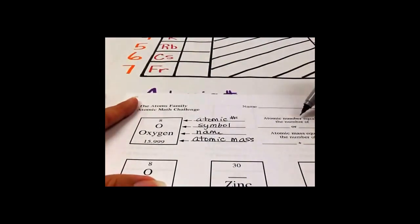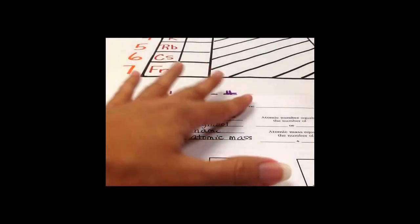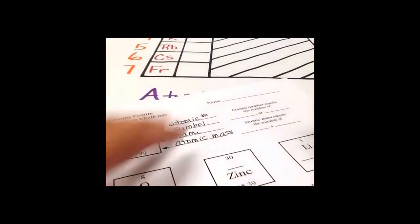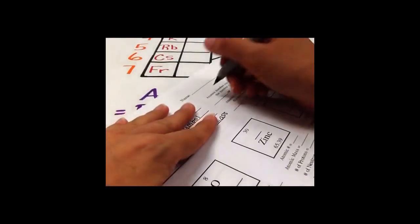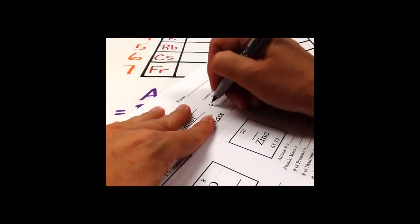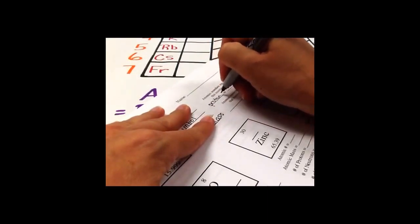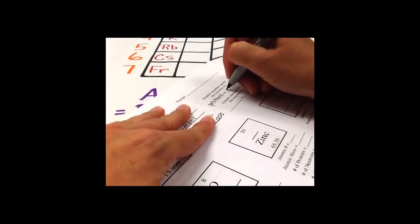The atomic number equals the number of... you guys should have this memorized by now. So the atomic number is equal to protons or electrons.